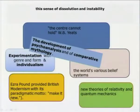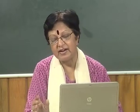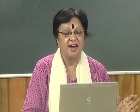Experimentation with genre and form, and individualism — you are unique because you have done it in your own way. Ezra Pound provided British modernism with its paradigmatic motto: 'Make it new.' Every writer, every creative poet or dramatist, contributed something new. New theories of relativity and quantum mechanics in science also helped transfer these ideas into the understanding of existence.